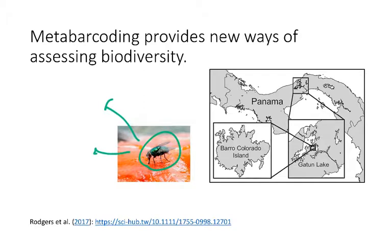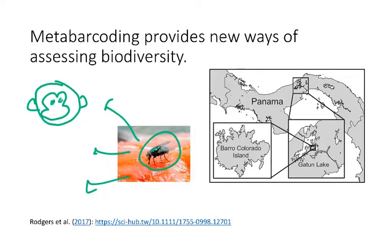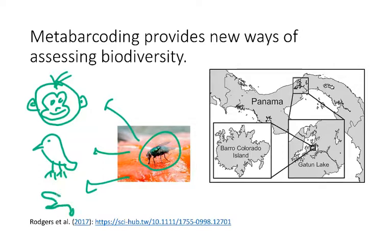They were able to use metabarcoding to figure out what type of mammals were present at this island. What they found — and I'm going to draw this for you — were several different types of monkeys, several different species of birds, and some lizards present at this site. So from the DNA in the carrion flies, metabarcoding revealed multiple vertebrate species living on the island.